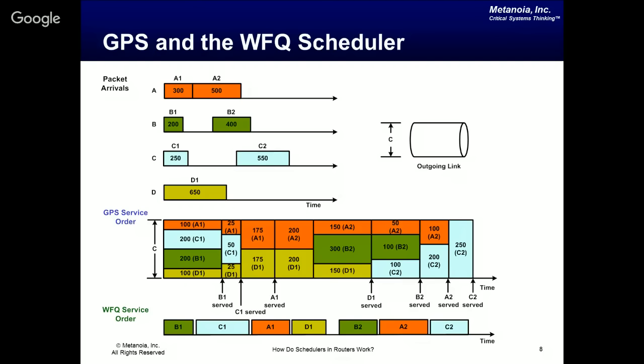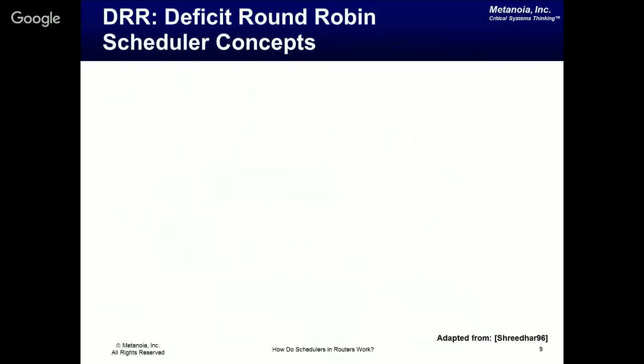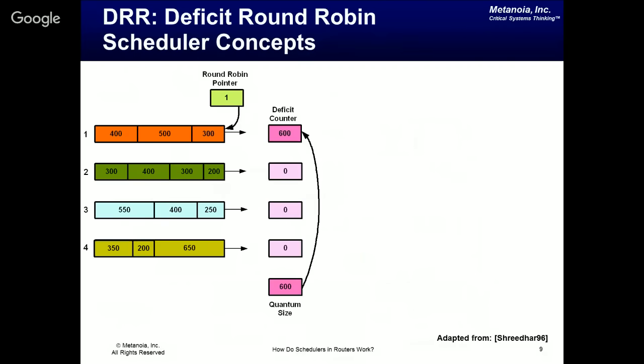To overcome WFQ's computational complexity, Frida and Varghese came up with the deficit round-robin (DRR) scheduler, which does computation in O(1) time. DRR has two key quantities: a quantum size, which dictates how many bytes are served from each queue per round, and a deficit counter associated with each queue that records how much under or over the quantum you went in a given round.